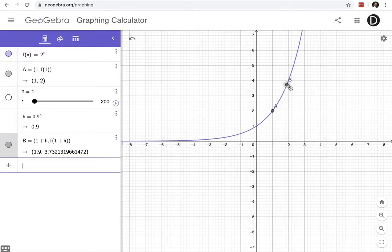And you can see on the graph that I have both of my points. And as n gets bigger, my second point moves towards my first point. So that's the key idea to find the tangent line using a secant line.